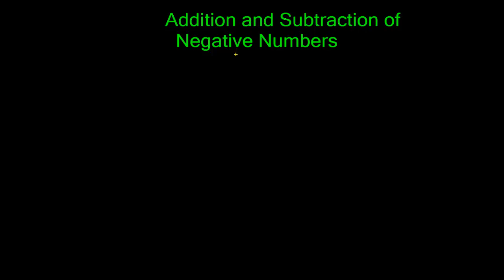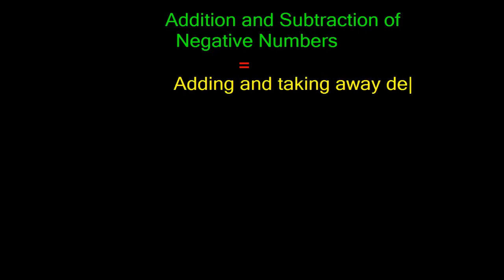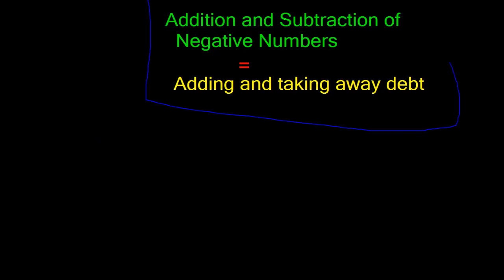This lesson is addition and subtraction of negative numbers, which in layman's terms means adding and taking away debt. Negative numbers are very important because they help us track how much money we have. So it's important that we can add and subtract negative numbers.